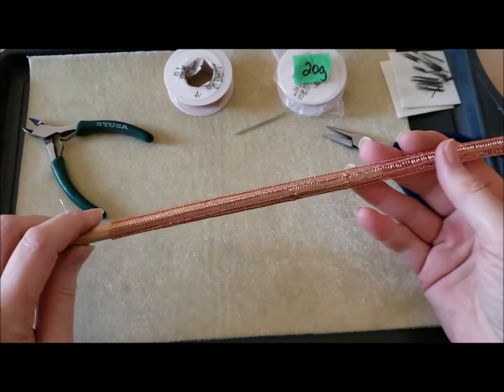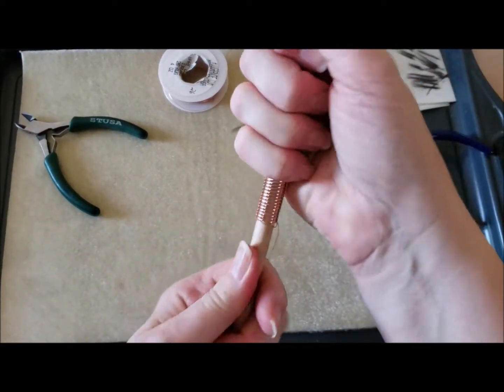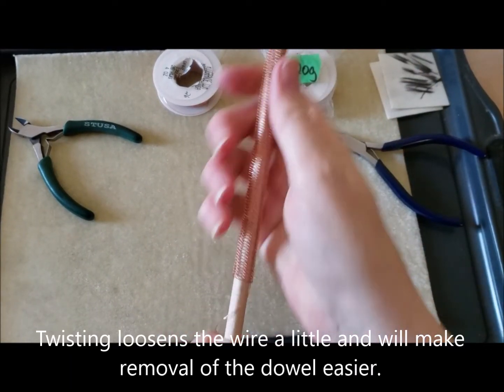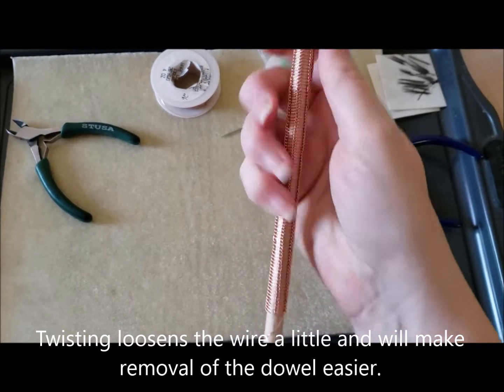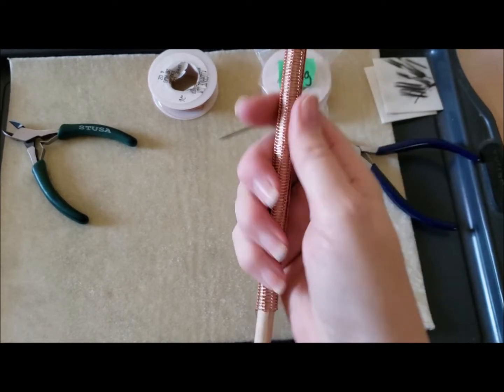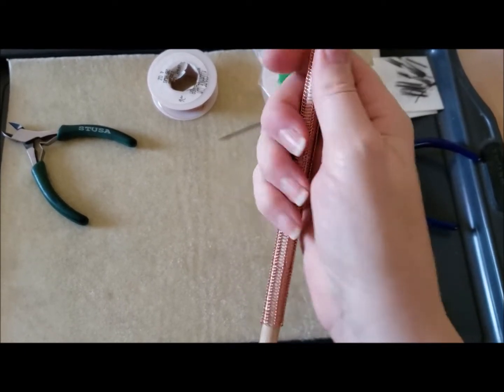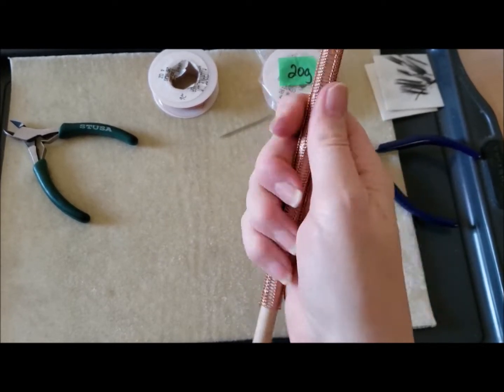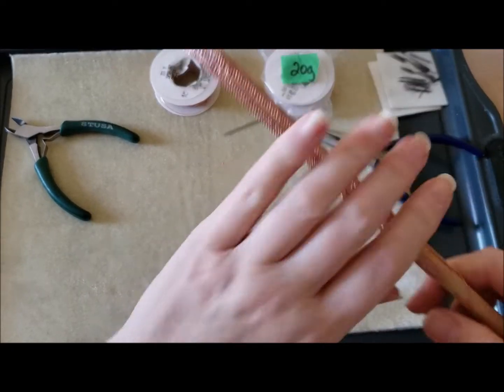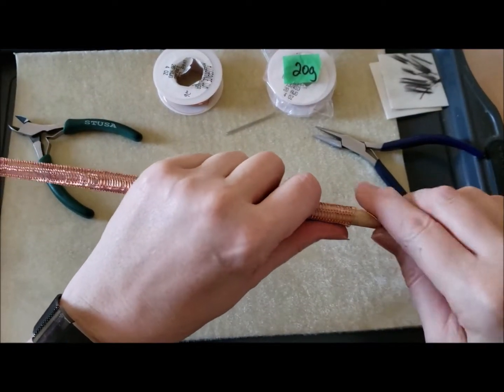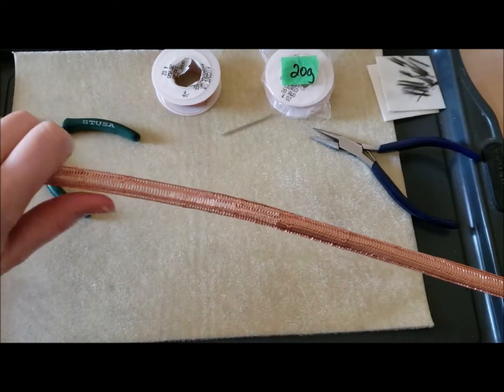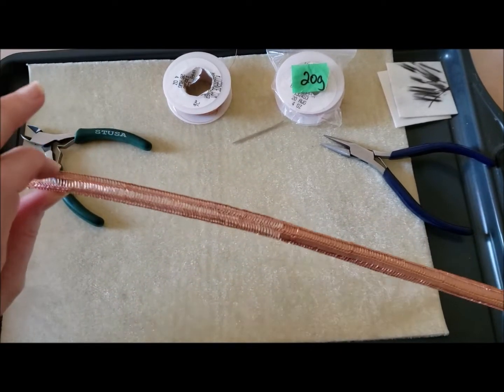First thing you need to do if you haven't done it already is you need to twist your work on the dowel and you'll notice I'm twisting in multiple places because otherwise I'll just end up twisting a section and I want to keep this nice and straight if I can do it at all.